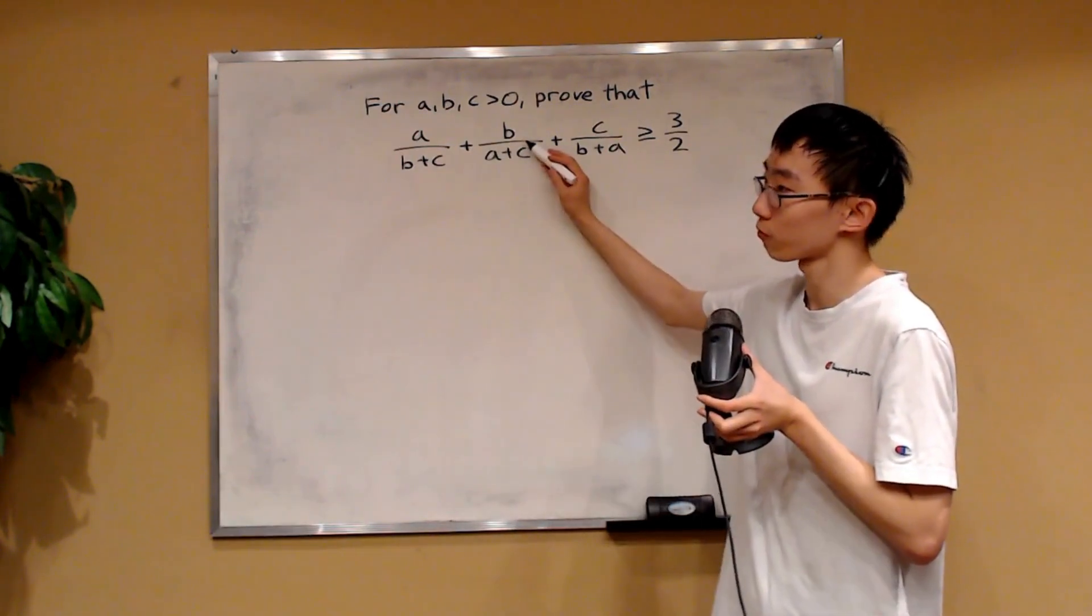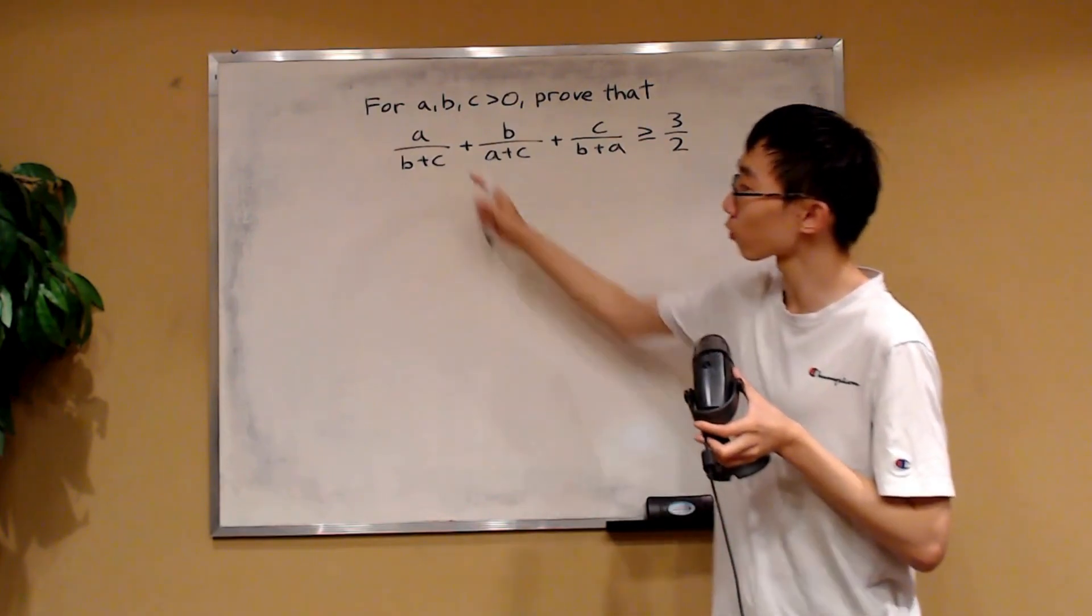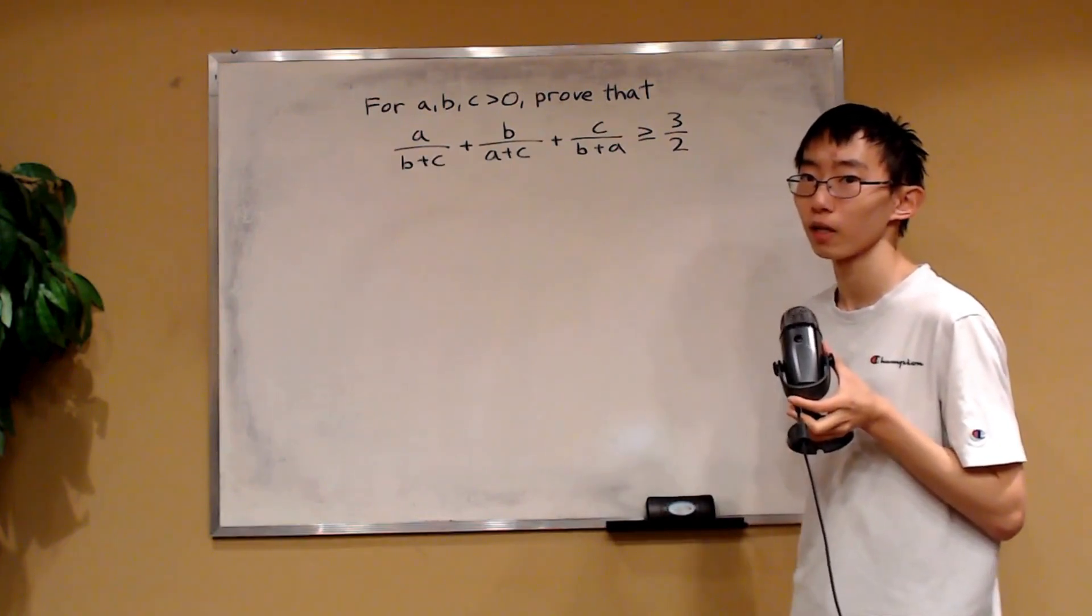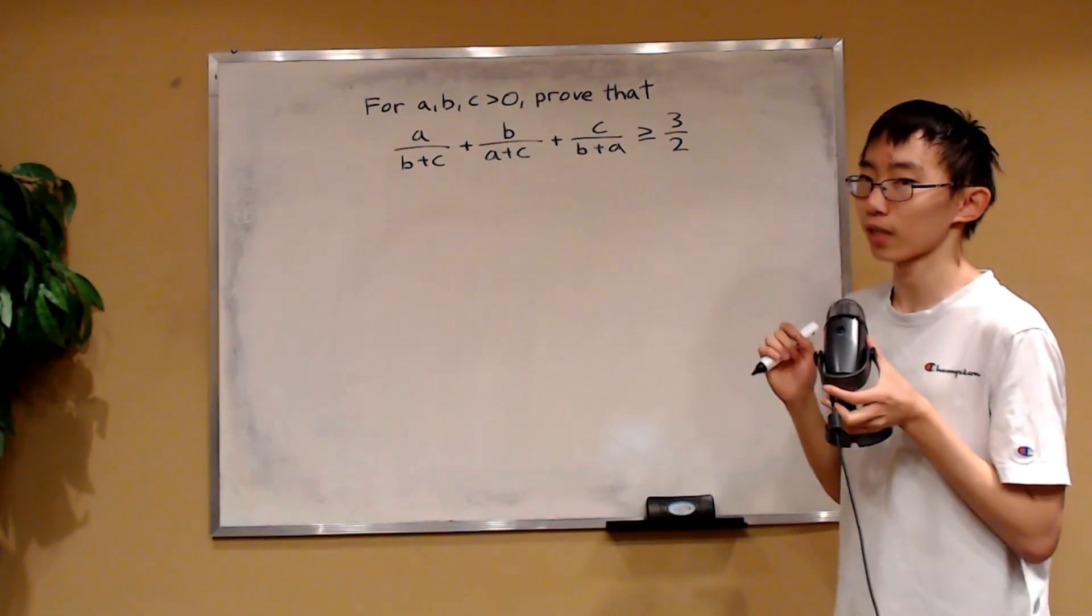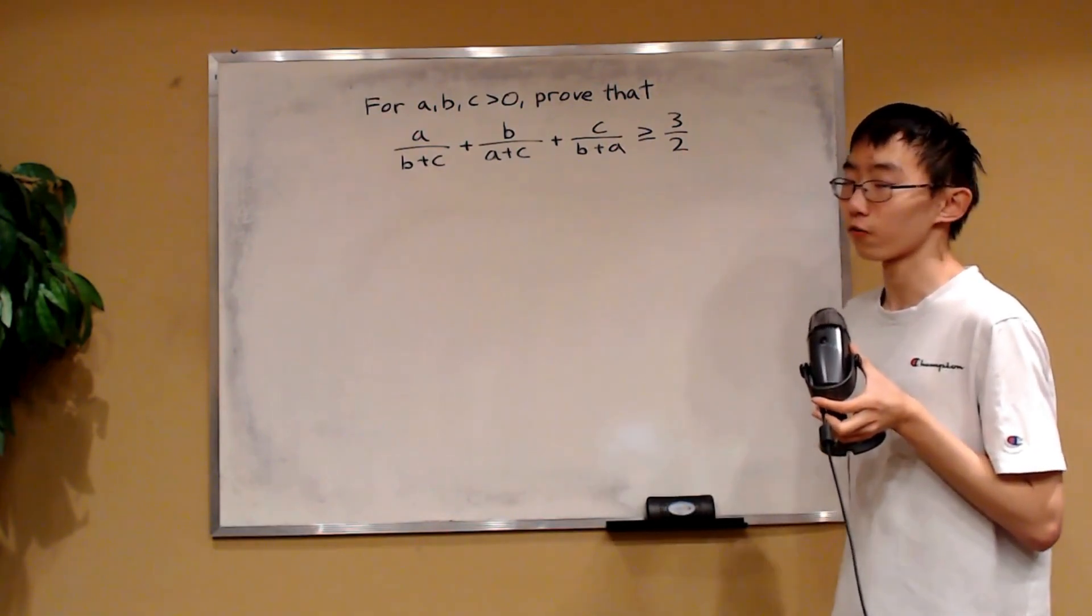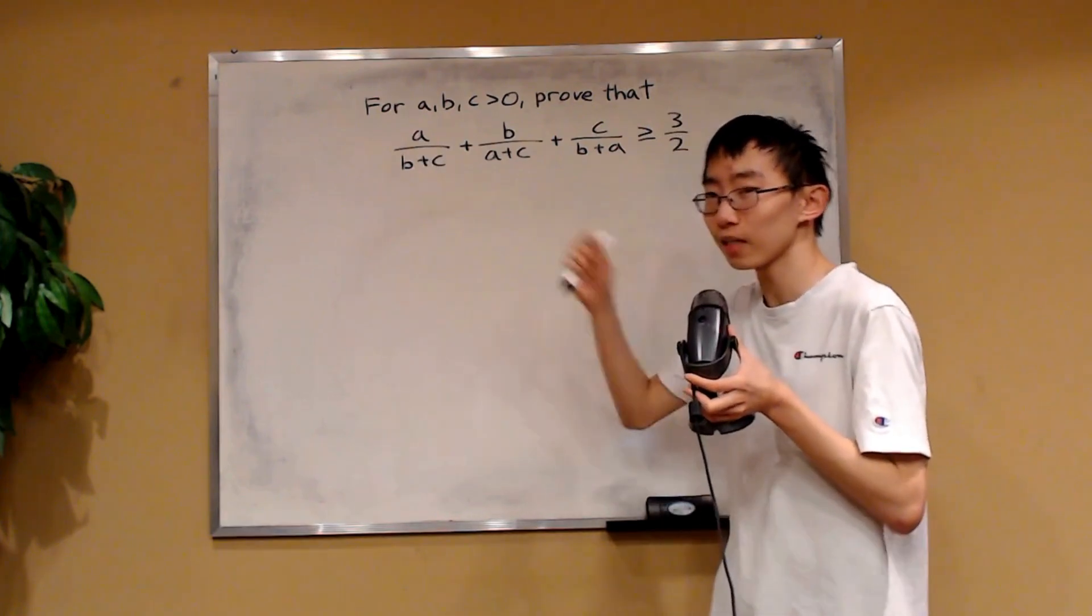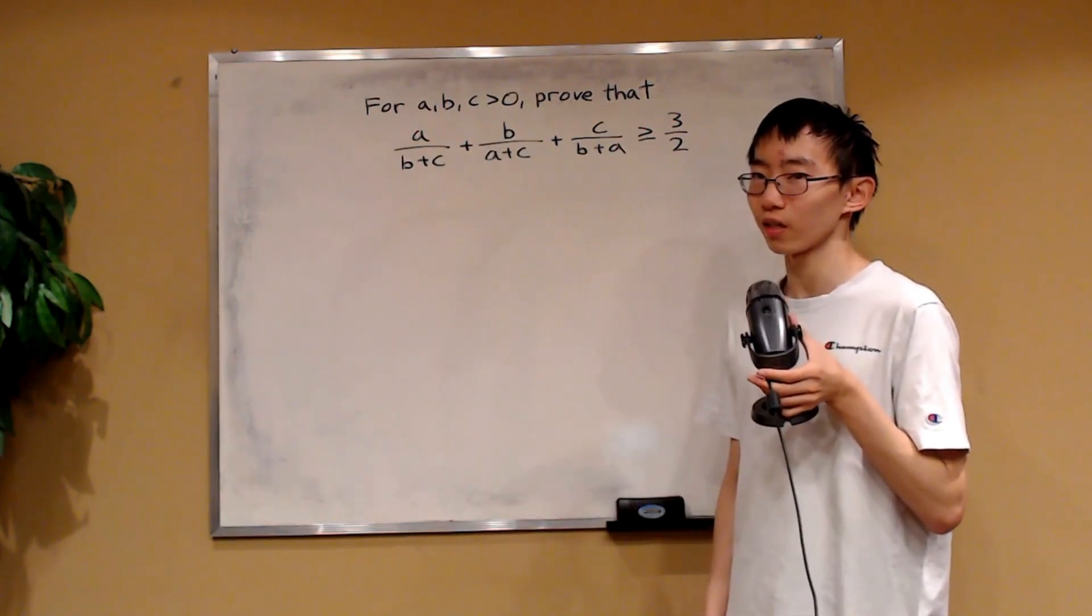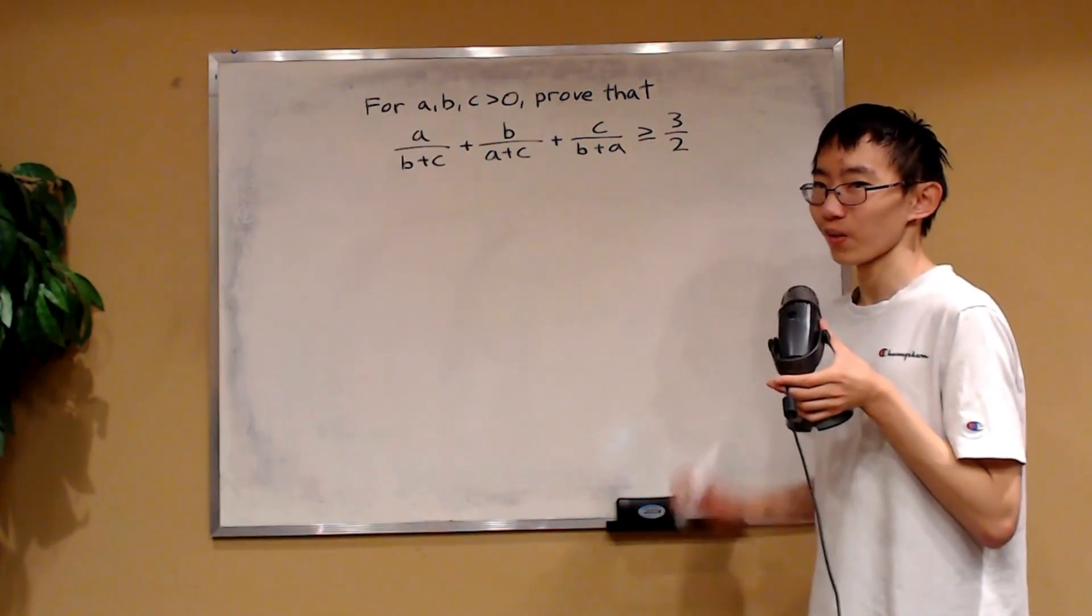And similarly, if we could write this term as a function of B alone, and this term as a function of C alone, then we would just have three terms, all of which are just a function of one variable. That would make it very easy to analyze each term individually. But we cannot do that right now because we don't know any relationship between A, B, and C.